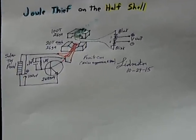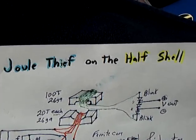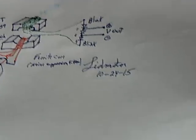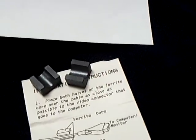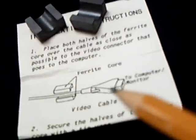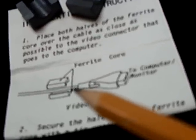Okay, well this is a little fun project I'm calling Jewel Thief on the Half Shell. I got these little noise suppression ferrites from an electronic gold mine. They were real cheap, a whole bunch of them for two bucks.